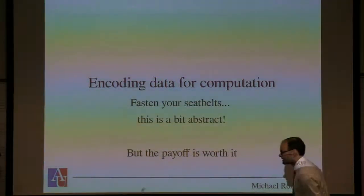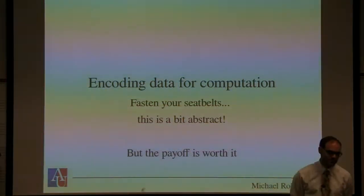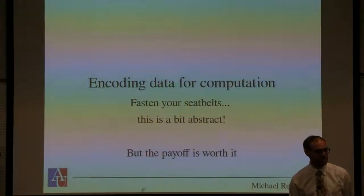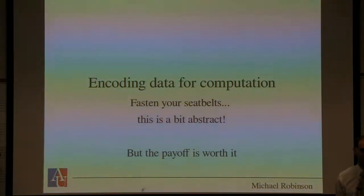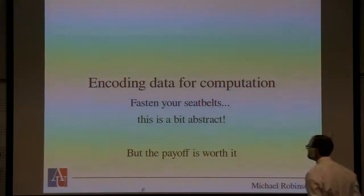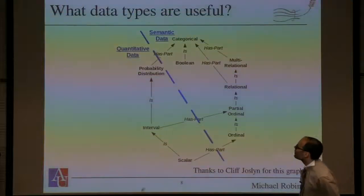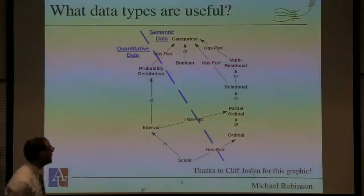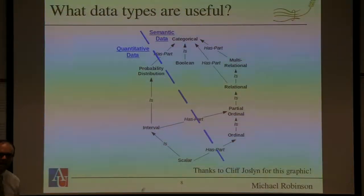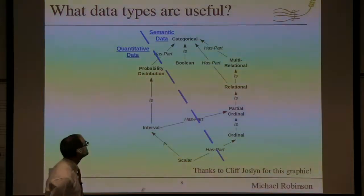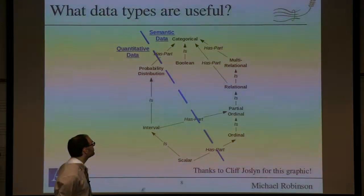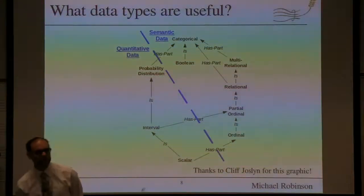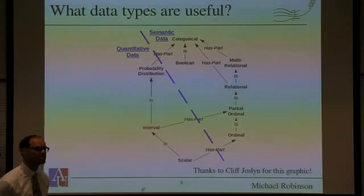So what kind of data types are there? Thanks to Cliff for drawing this diagram — these are various kinds of data types often used in data science. At the very top of the diagram are categorical variables: set-valued kinds of things with not much internal structure. For instance: cat, dog, bird — various kinds of animals with no further structure.